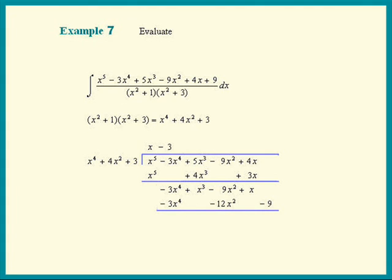Draw a line and then subtract. We have the remainder, x cubed plus 3x squared plus x plus 9. How did we know we were done? Because now you have the third degree x cubed and the divisor was x to the 4th.